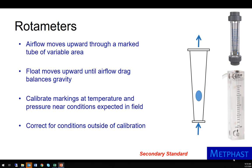Rotometers are another type of air flow measuring device. In a rotometer, air flow moves vertically through a marked tube of variable area. A float moves upward until the air flow balances gravity. It is important to read the position of the float with the rotometer in the vertical orientation.